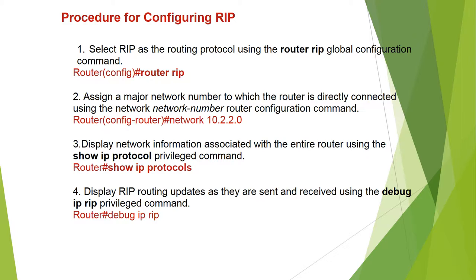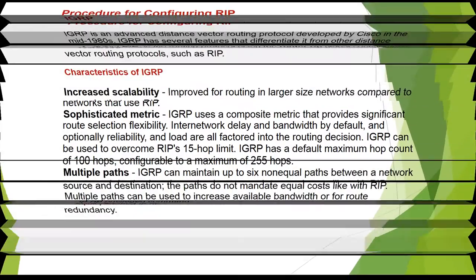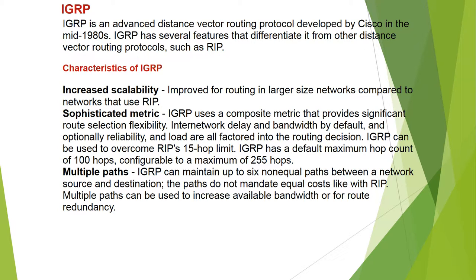Router(config-router)# network 10.2.2.0. Display network information associated with the entire router using the 'show ip protocol' privileged command. Router# show ip protocol. Display RIP routing updates as they are sent and received using the 'debug ip rip' privileged command.